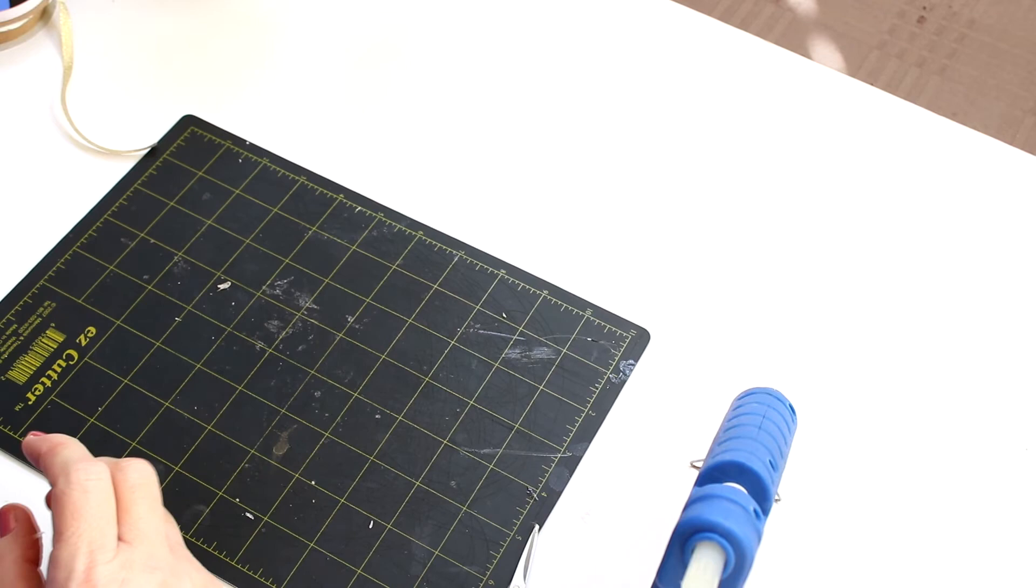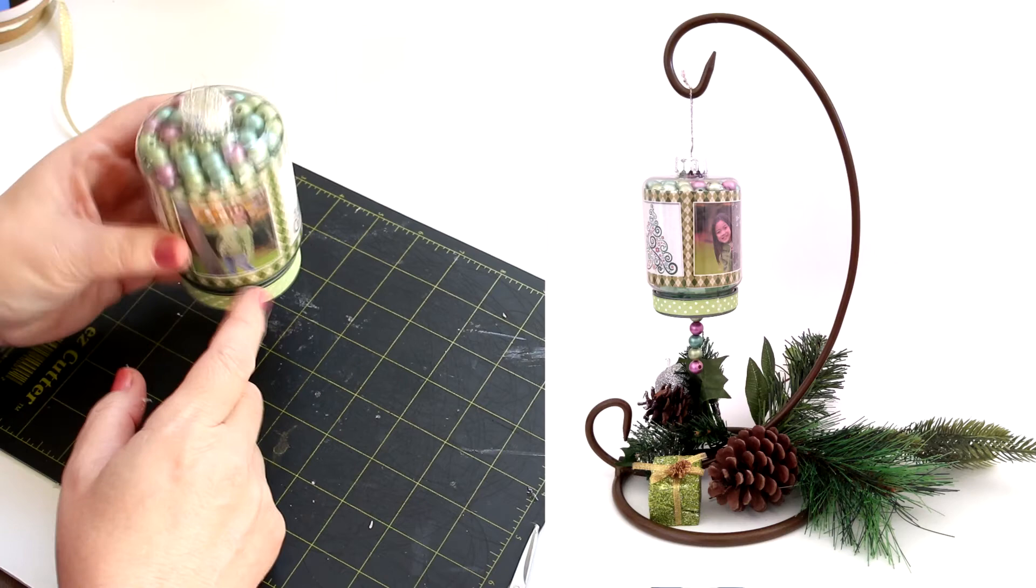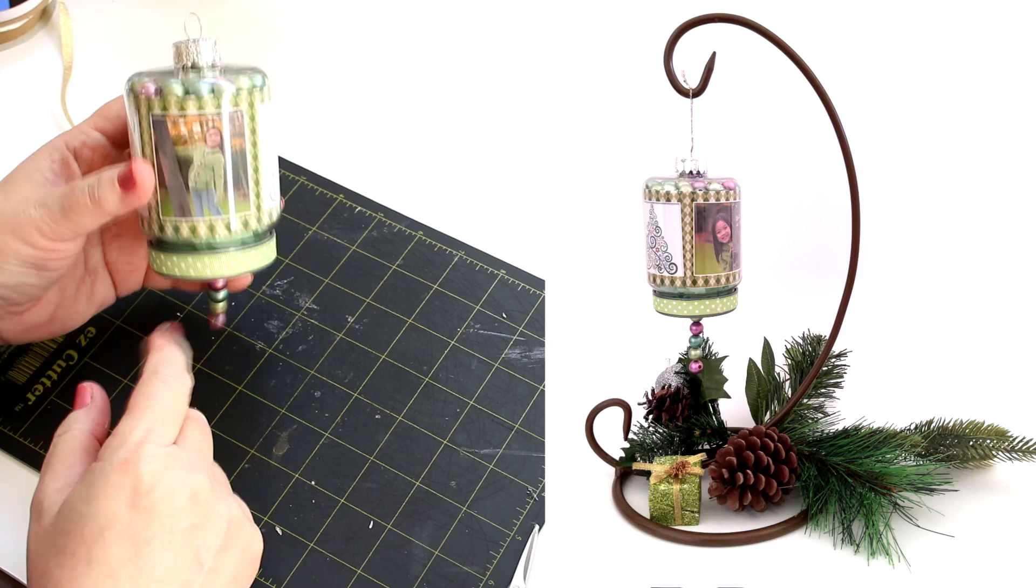This one is the argyle one. It's got the nice green argyle pattern to it. And I had purchased these beads also at the Dollar Tree. And I did the same process that I did with the Christmas ornament there is I put a layer of beads and then I filled it up with tissue paper.